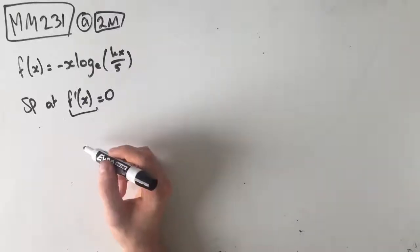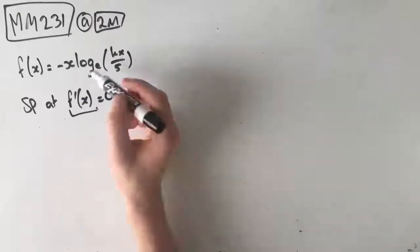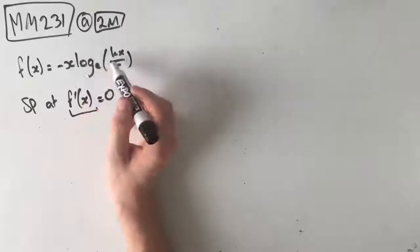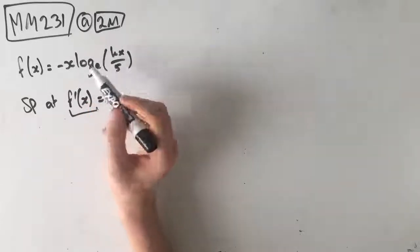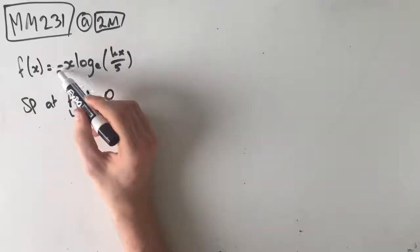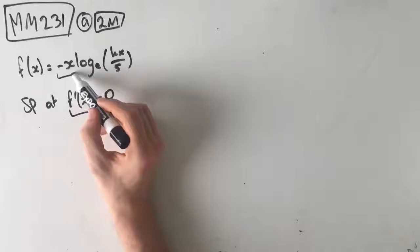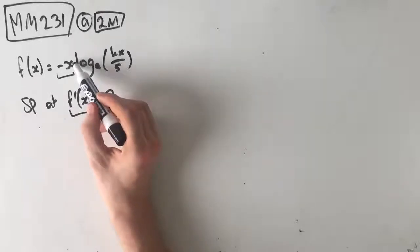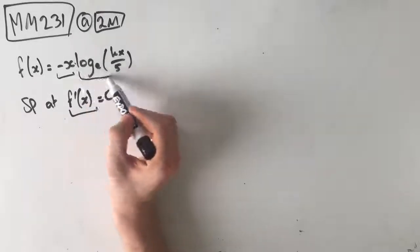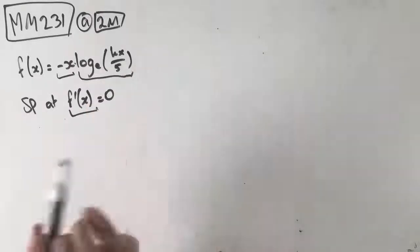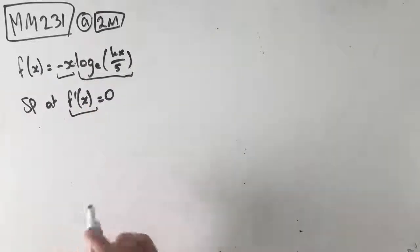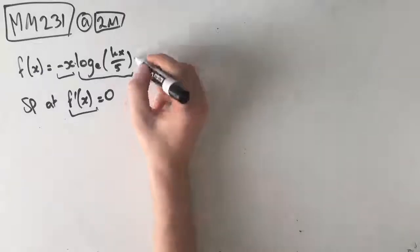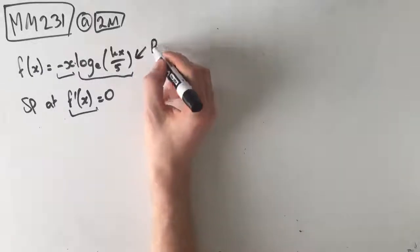This function is a product function, because we've got negative x at the front multiplied by log e of kx on 5. So to find f'(x), we're going to need to use our product rule. Let y equal u times v, where u equals negative x and v equals log e of kx on 5.